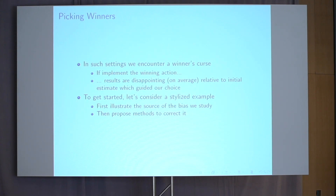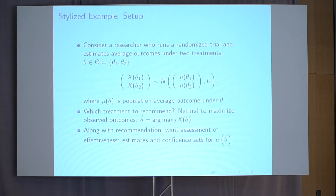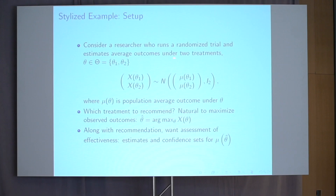To illustrate this phenomenon, I want to start with a stylized example. Imagine a researcher running a randomized trial evaluating outcomes under two treatments, theta 1 and theta 2. The average outcome in the experiment under treatment theta 1 is x_theta_1, and under theta 2 is x_theta_2. Since we're running a nice experiment, these are unbiased for the population average outcomes mu_theta_1 and mu_theta_2. For the stylized example, suppose those experimental estimates are normally distributed with identity variance-covariance matrix.